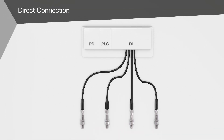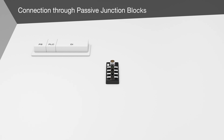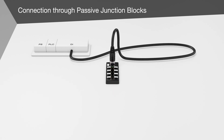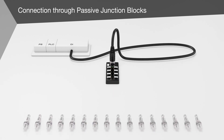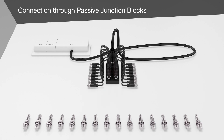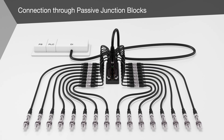Sensors have traditionally been directly wired to the input cards on the PLC using a sensor cable. To reduce wiring effort, passive junction blocks were introduced. These collect the signals from multiple sensors on their way to the PLC and consolidate them.